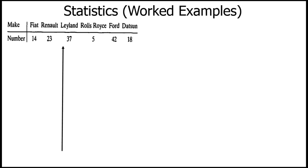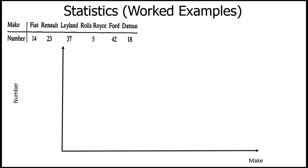Our y-coordinate is going to be for the number, and our x-coordinate underline will be for the make. We can label those now - the x-coordinate is 'make' and the y-coordinate is 'number.' Remember, labeling is as important as plotting your graph, so that anyone who looks at the graph knows exactly what it is saying. The labeling is a vital part of your graph plotting.